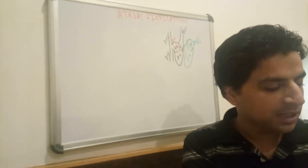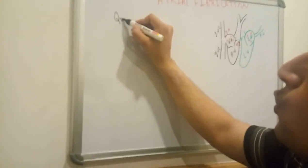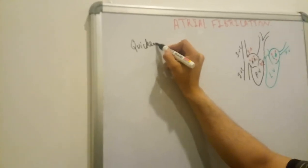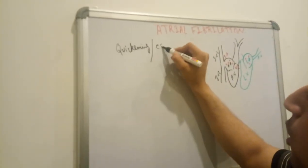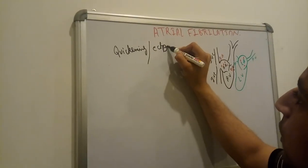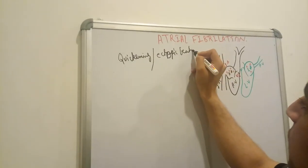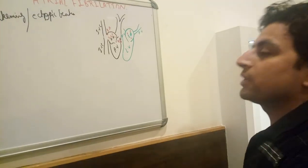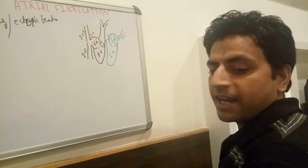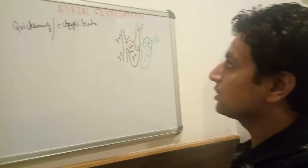This is known as atrial fibrillation. There is ectopic beat development in the atria — they fire so much — and re-entry, which is known as atrial fibrillation.